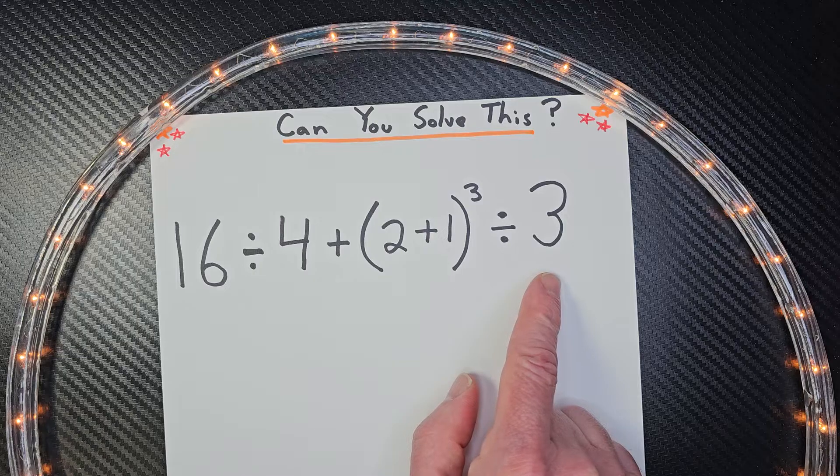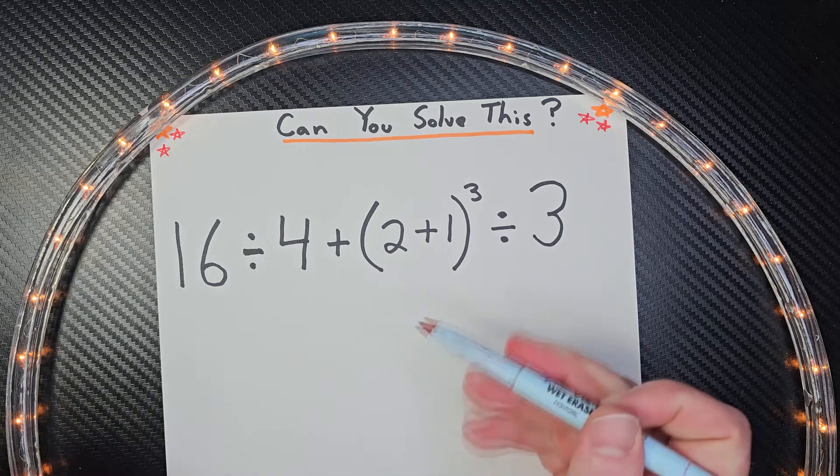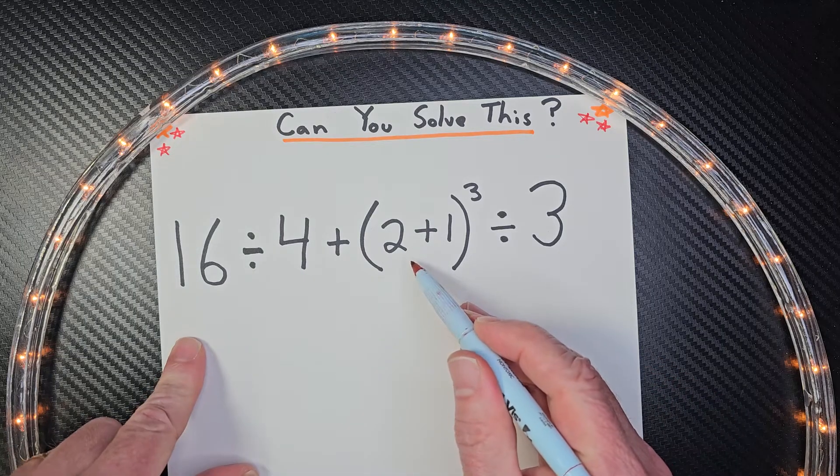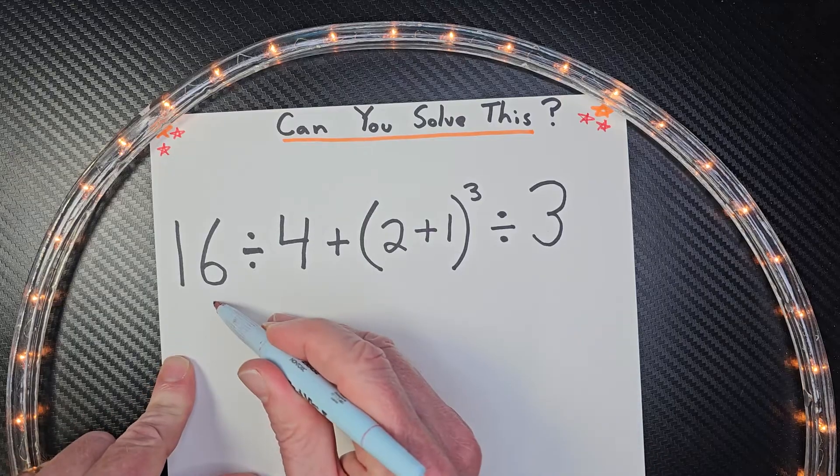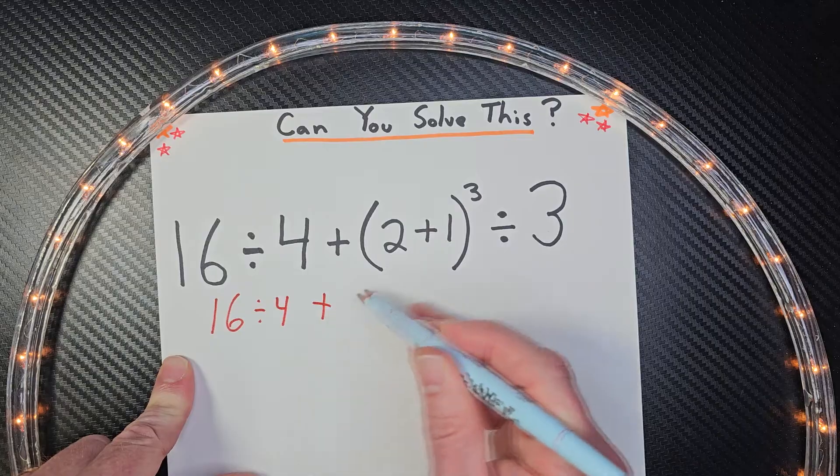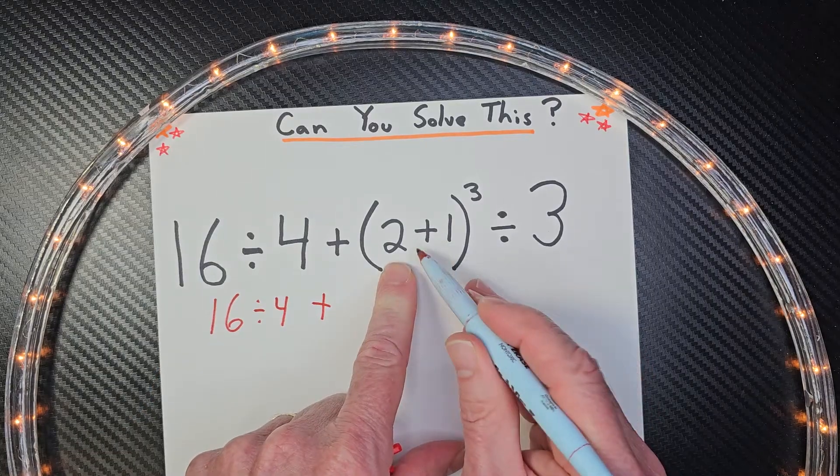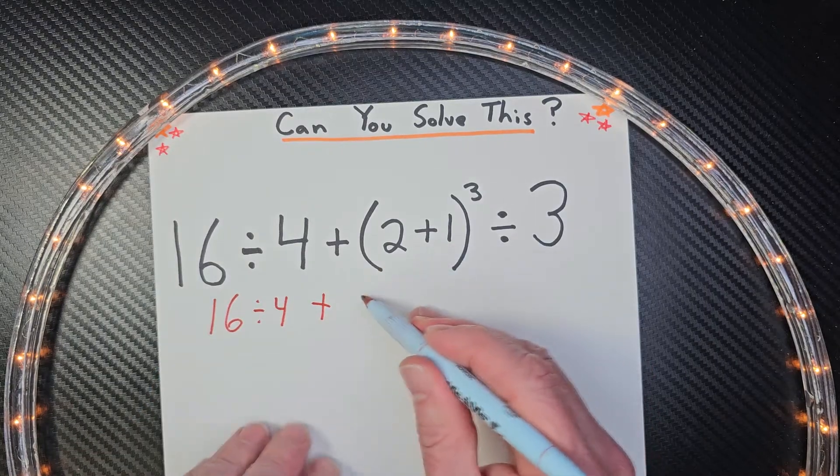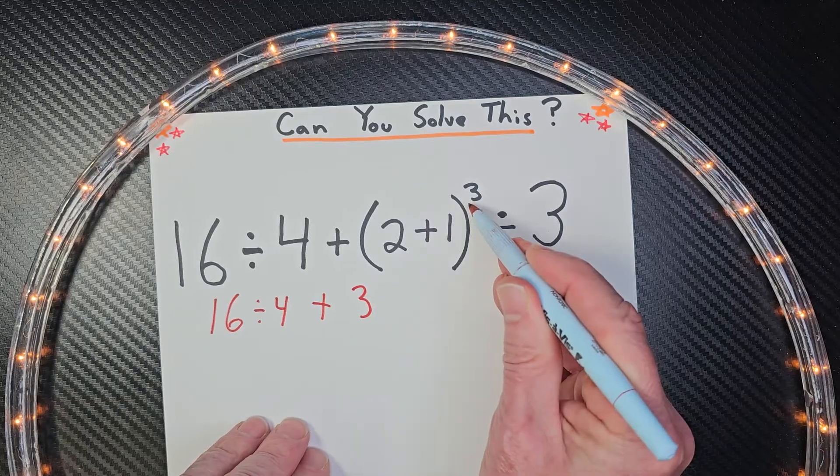So let's get right into it. I have something inside the parentheses, so we need to do that first. I'm just going to rewrite this: 16 divided by 4 plus, do what's inside parentheses, 2 plus 1 would be 3, and then to the third power divided by 3.